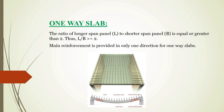The first one is the one-way slab. The one-way slab is designed when the ratio of longer span to shorter span is equal to or greater than 2. The main reinforcement is provided in only one direction in a one-way slab, and the one-way slab transfers loads in one direction.